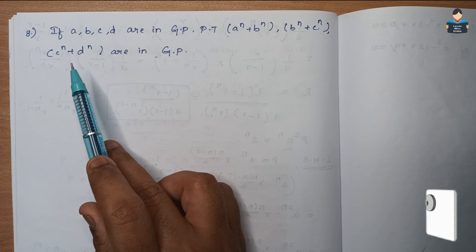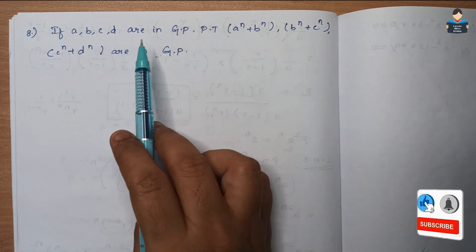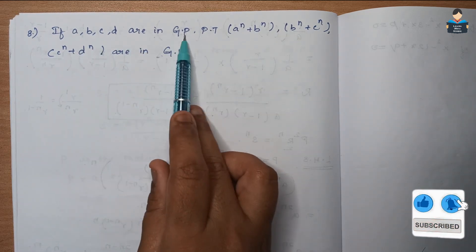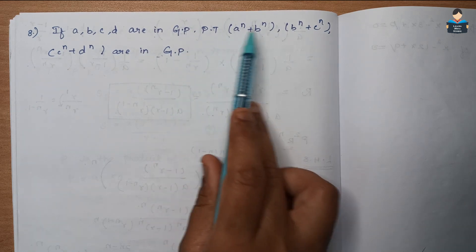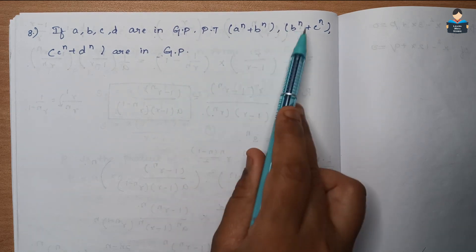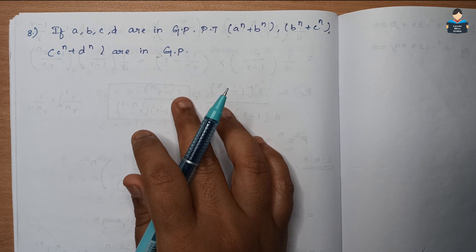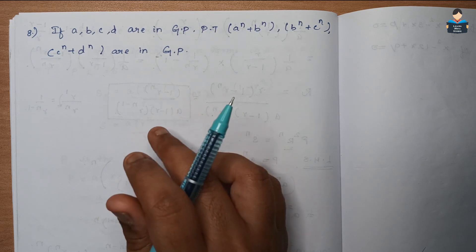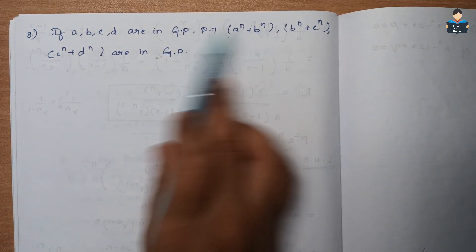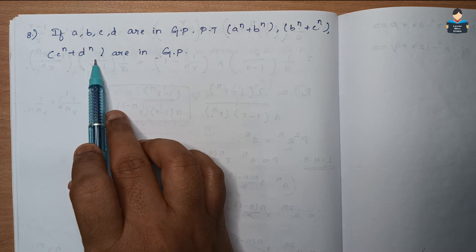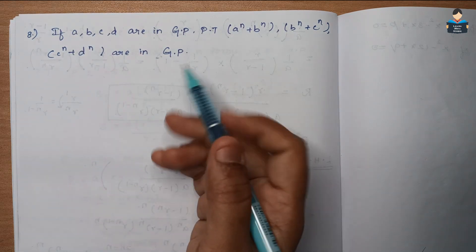So what we are saying is that A, B, C, D are in GP. We are going to prove it. We will use the common ratio.